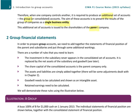Let's move on now and think about how we go about preparing a set of group accounts. We're going to start off in chapters one and two by looking at the group statement of financial position, and then in chapter three we'll move on and take a look at the group statement of profit or loss. In its most basic form, to prepare group accounts we're simply adding together the figures in the statement of financial position of the parent and subsidiaries, along with some additional workings.